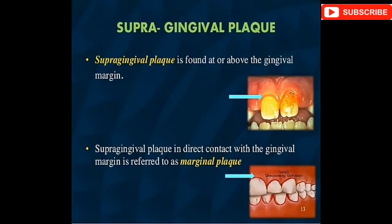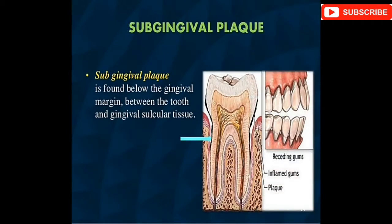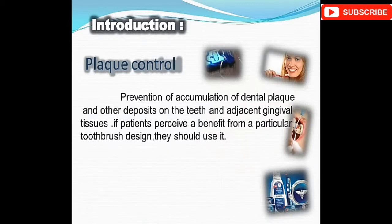The classification consists of supra-gingival and sub-gingival plaque. Supra-gingival plaque is found above the gingival margin; when in direct contact with the gingival margin it is referred to as marginal plaque. Sub-gingival plaque is found below the gingival margin between the tooth and gingival sulcular tissue.